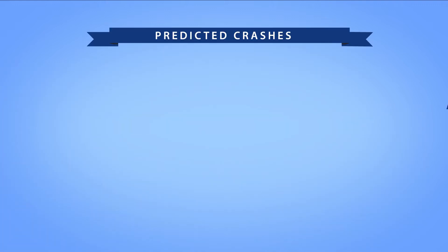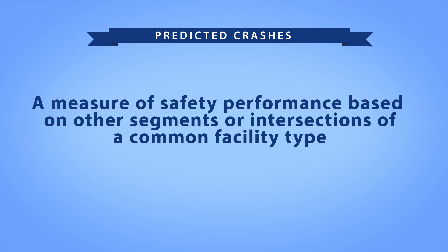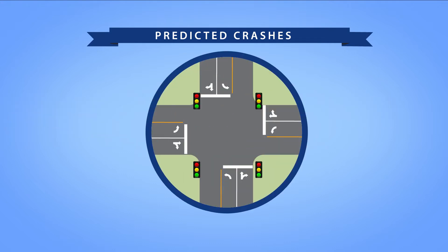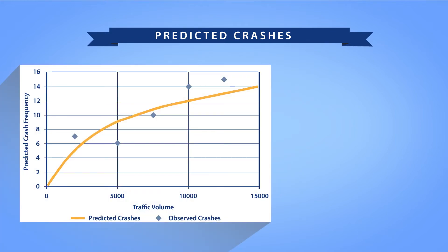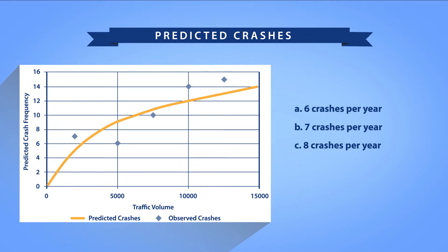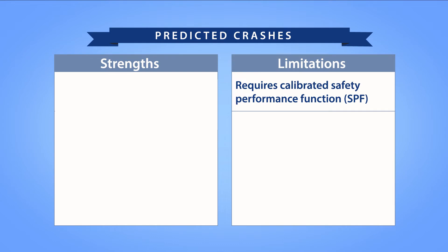The predicted crash frequency is a measure of safety performance based on other segments or intersections of a common facility type. For example, you can predict the safety performance of an urban four-legged signalized intersection based on the safety performance of other similar urban four-legged signalized intersections. If you were given this chart and asked to predict the crash frequency for a facility with 5,000 vehicles per day, what value would you select? A, six crashes per year; B, seven crashes per year; C, eight crashes per year; D, nine crashes per year. The answer is D, nine crashes per year, because this is where the line for predicted crashes crosses the traffic volume of 5,000 vehicles per day. You will need an SPF to compute the predicted crashes.